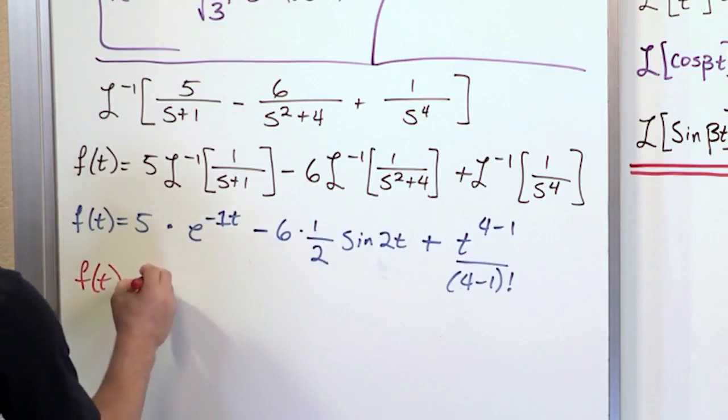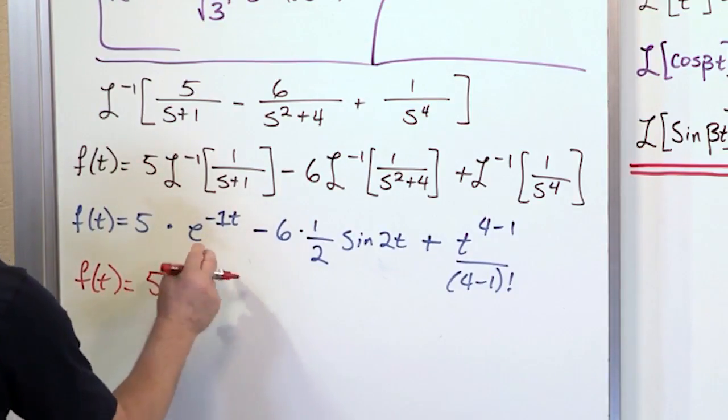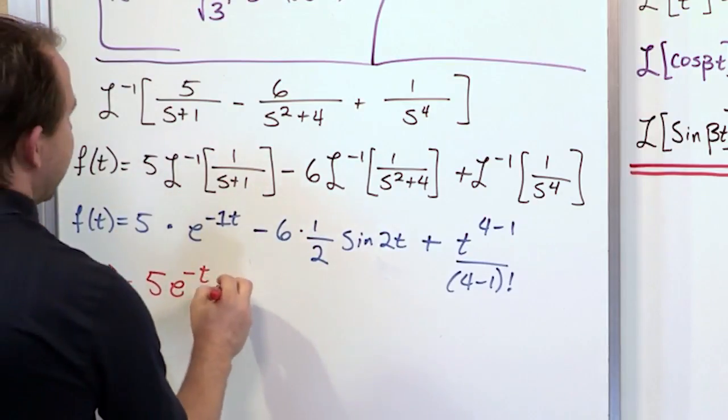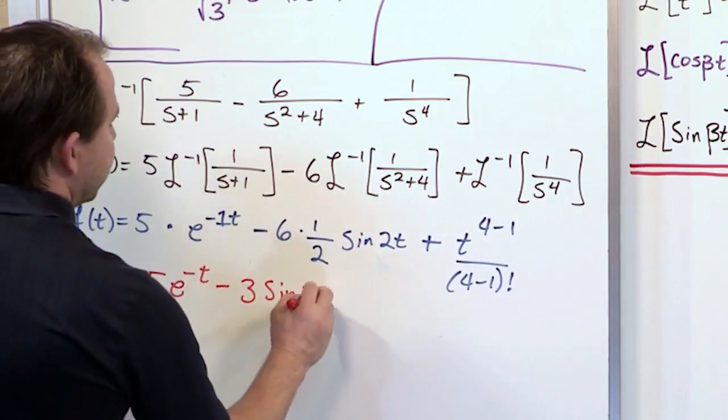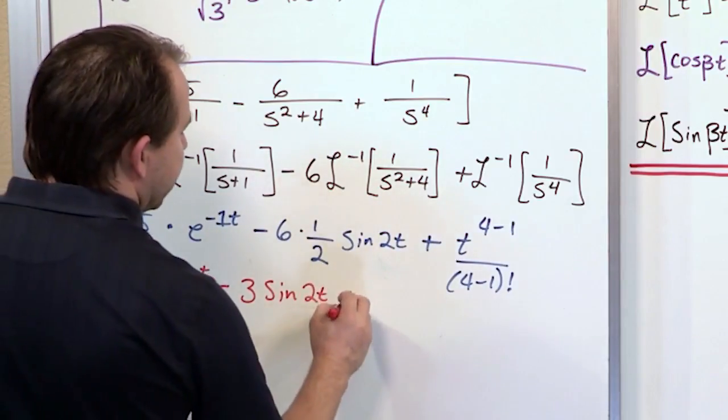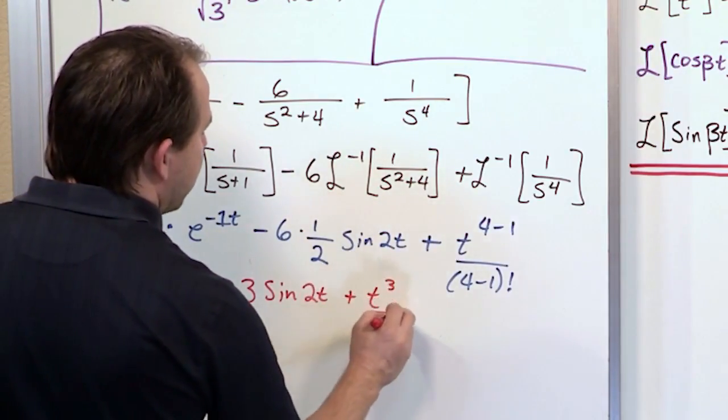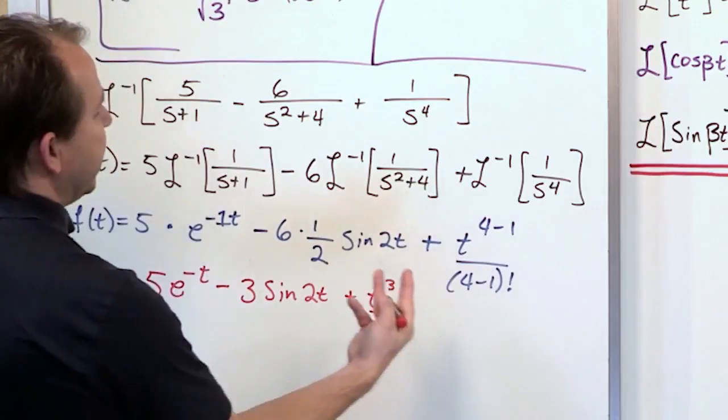So what we have in our final answer is 5 times e to the minus t coming from this. Here we have 6 over 2 giving us 3 times the sine of 2t. And over here what we have is t to the third power over.